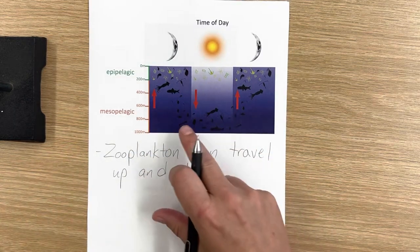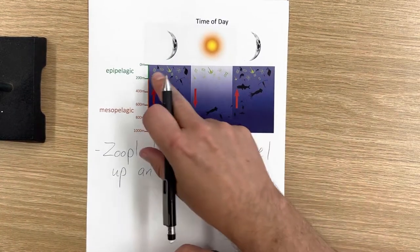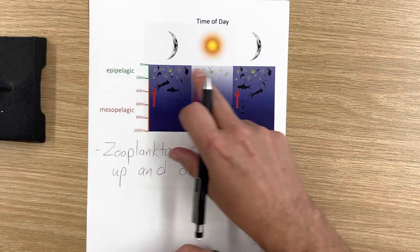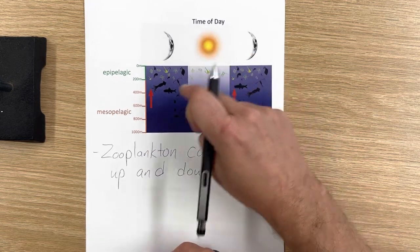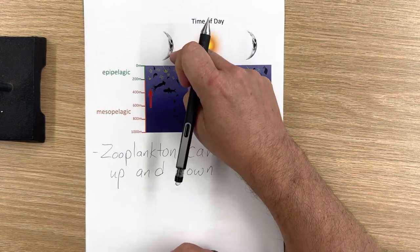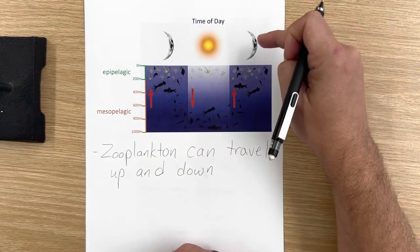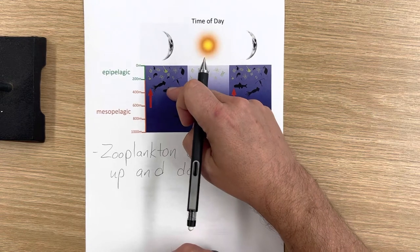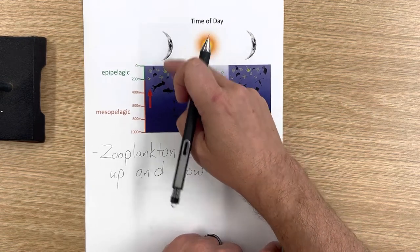And what we see with the zooplankton, not so much the phytoplankton, which you see here in green. The phytoplankton stay near the surface. They need the sunlight. But the zooplankton, what we see is at nighttime, and the moon's out here letting us know it's nighttime, the zooplankton have migrated up at nighttime.